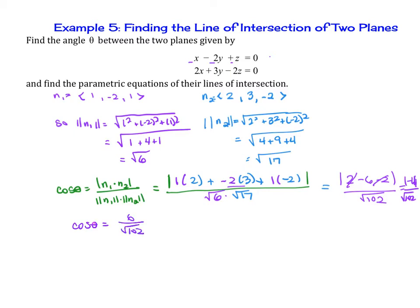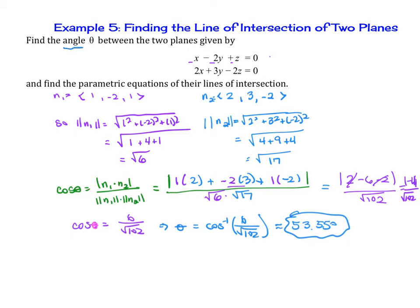Remember, we're trying to find theta. So theta equals cosine inverse of 6 over the square root of 102. Make sure your calculator is in degree mode. When you evaluate this, you get approximately 53.55 degrees. That is the first part, finding the angle between the two planes.